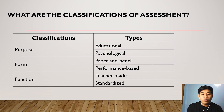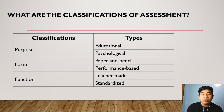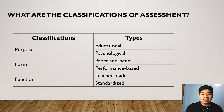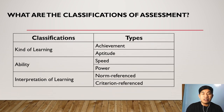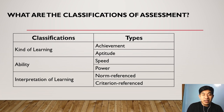If we classify assessment by form, we have two types: paper and pencil test and the performance-based test. If we classify assessment as to function, we also have two types: the teacher-made test and the standardized test. If we classify assessment according to the kind of learning, there are two types: the achievement test and the aptitude test. Another classification is through ability, which has two types: the speed test and the power test.